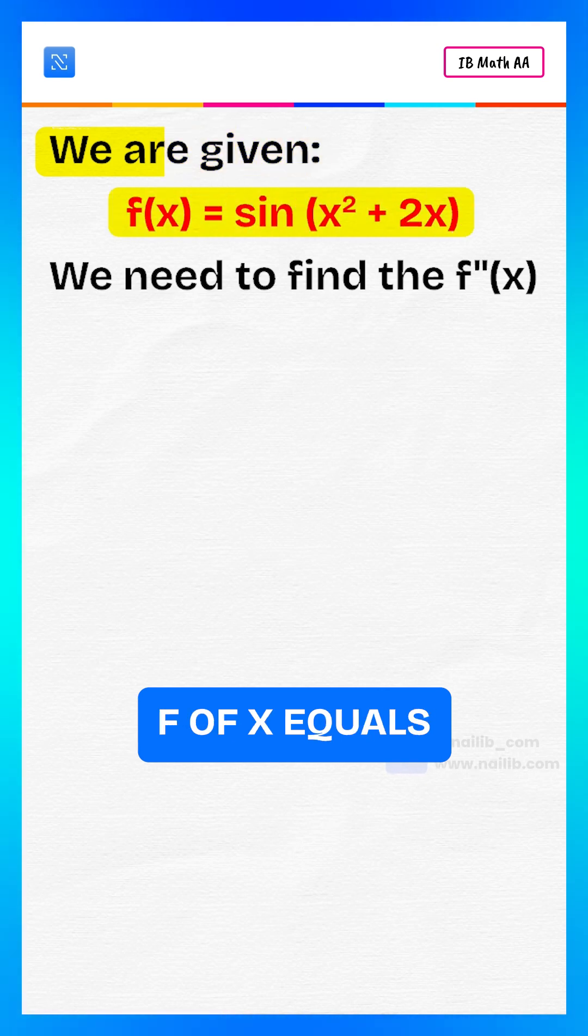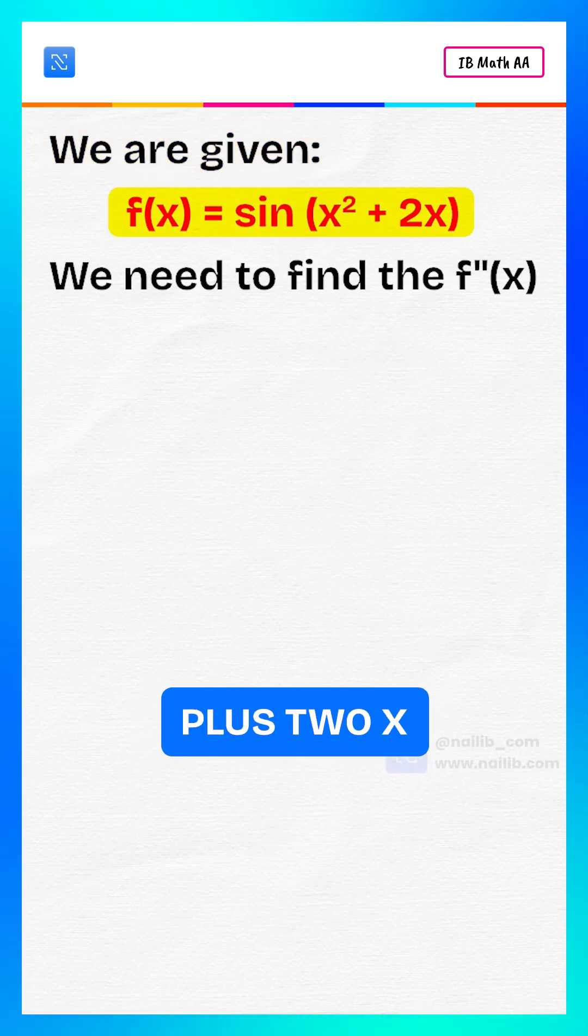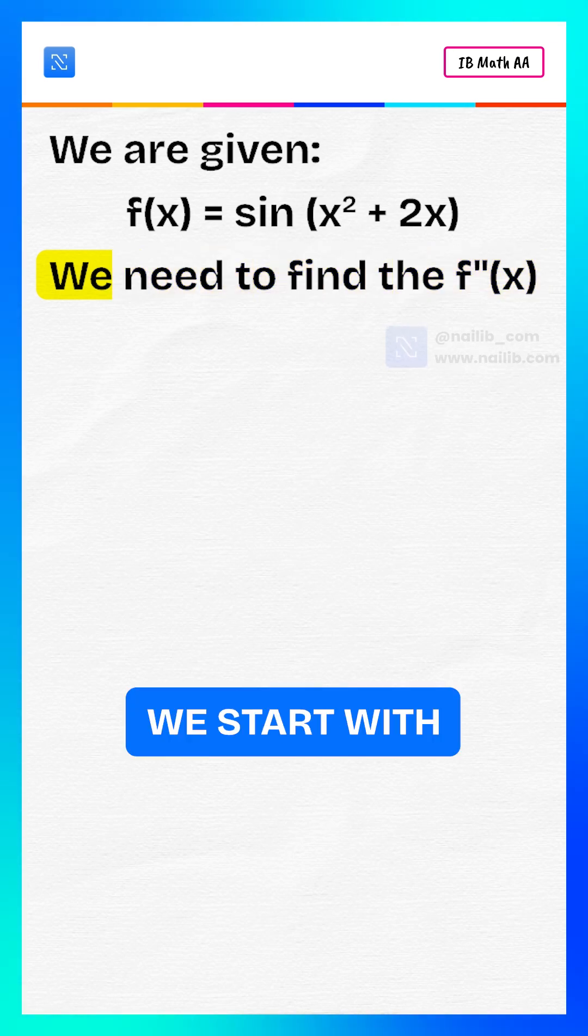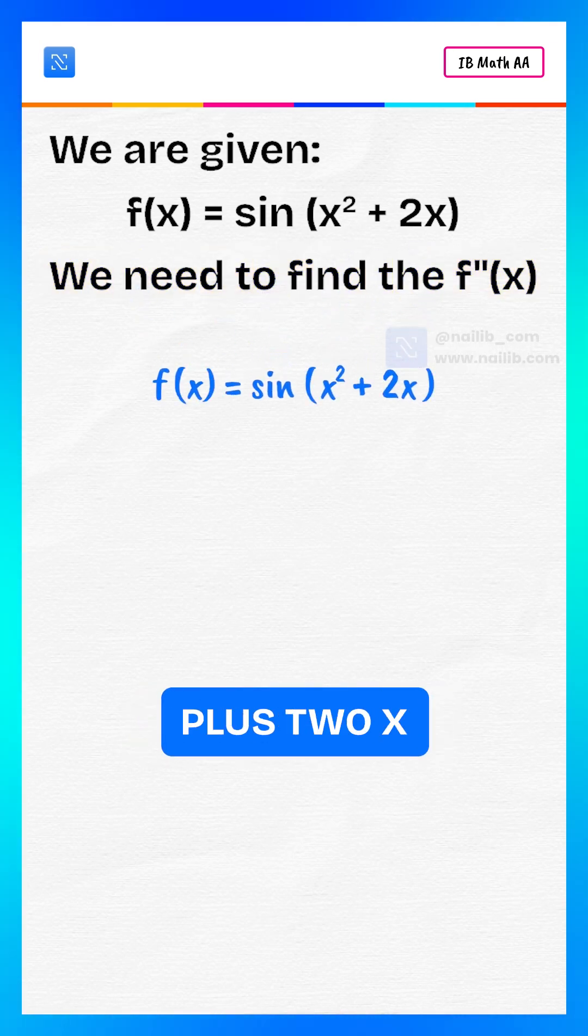We are given f of x equals sine of x squared plus 2x. We need to find the second derivative of x. We start with f of x equals sine of x squared plus 2x.